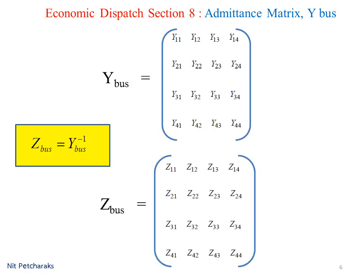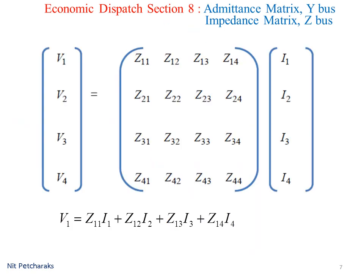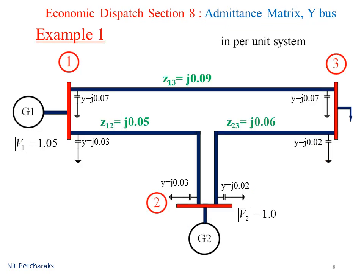After finding Y bus, we can calculate bus impedance matrix from the inverse matrix of Y bus. Write voltage equation in matrix form. If bus impedance matrix and currents are known, we can calculate the voltage at each bus.